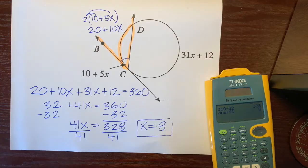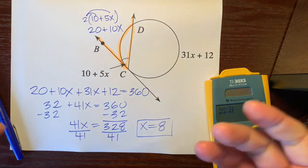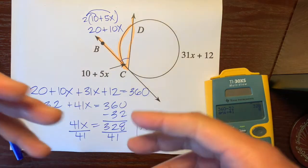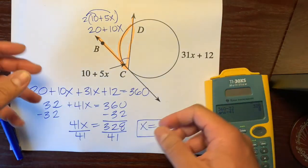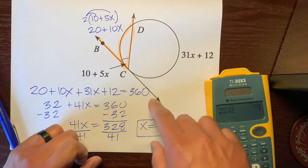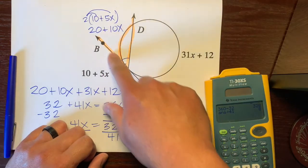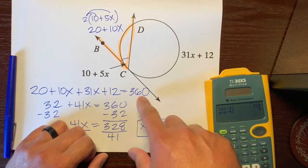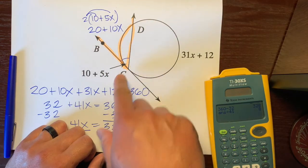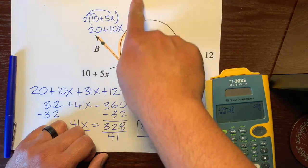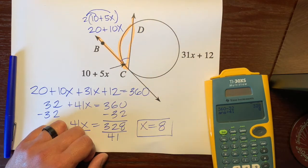That's how you find the angle measures and the arc measures when you're given a tangent line — a line that touches the circle once — and a secant line that goes through the circle twice. Hope this helps and have a great day.